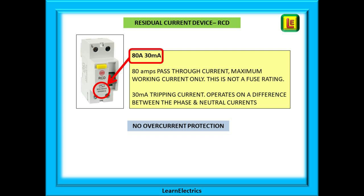The 30 milliamps shown on the front tells us the RCD will operate when the difference between phase and neutral reaches 30 milliamps. Larger tripping currents are available — for example 100 milliamps and 300 milliamps — but these are usually for fire protection, not for preservation of life.